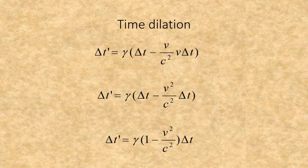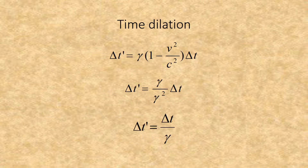This becomes delta t prime equals gamma times delta t minus v squared over c squared times delta t. From here we simply factor out delta t, resulting in delta t prime equals gamma times 1 minus v squared over c squared times delta t. Since gamma equals 1 over the square root of 1 minus v squared over c squared, our formula reduces to delta t prime equals gamma over gamma squared times delta t, which further reduces to delta t prime equals delta t over gamma.